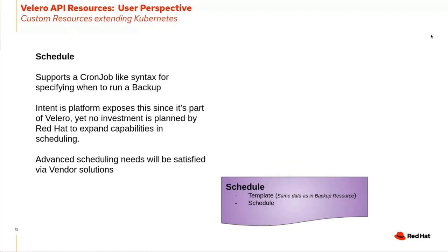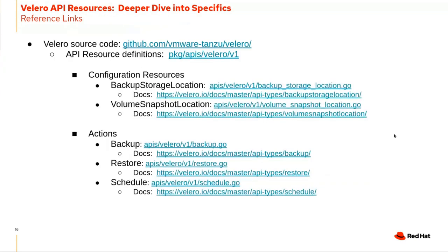The schedule resource is straightforward — the ability to use a cron-job-like syntax for specifying when you want backups to run, such as every three hours or every 24 hours. For advanced scheduling with more fine-grained capabilities, look to backup vendors. Links are provided in the presentation for extending any of these with plugins and to dive deeper into the Velero API documentation.